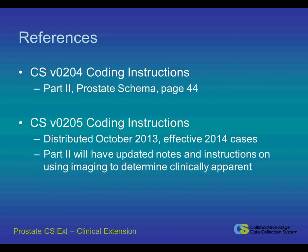The references used for this presentation include CS version 0204 coding instructions, section 1, part 2, page 44. Clarification is available in the new CS version 0205 distributed October 2013, effective with 2014 cases. Part 2 has updated notes and instructions on using imaging to determine clinically apparent.